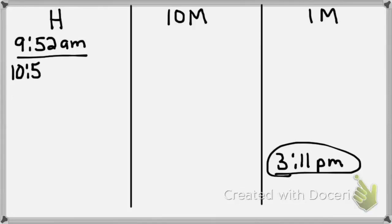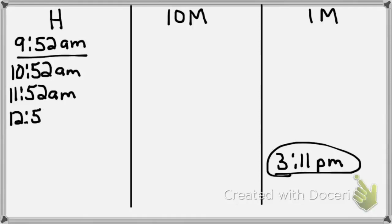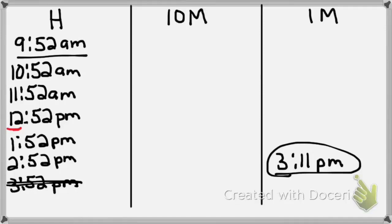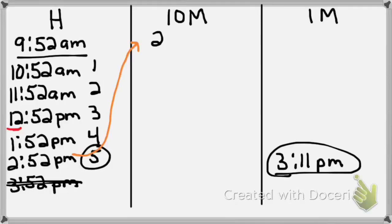Starting at 9:52 a.m., plus 1 hour is 10:52 a.m., then 11:52 a.m., then 12:52 — switching to p.m. at 12 — then 1:52 p.m., 2:52 p.m. One more hour would be 3:52 p.m., which is past 3:11, so I cross that out. My last good time is 2:52 p.m. Counting the hours: 1, 2, 3, 4, 5 hours. I'll circle that and save it. I move 2:52 p.m. to the next column and underline it.